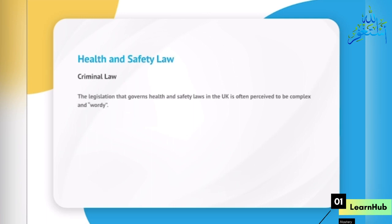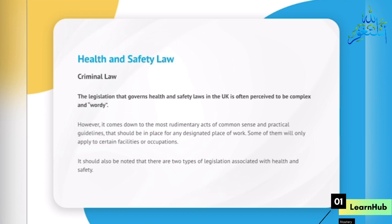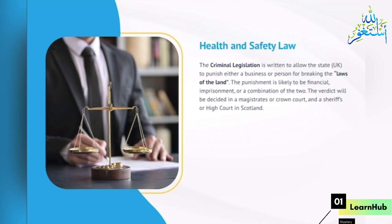Health and Safety Law — Criminal Law. The legislation that governs health and safety laws in the UK is often perceived to be complex and wordy. However, it comes down to the most rudimentary acts of common sense and practical guidelines that should be in place for any designated place of work. Some will only apply to certain facilities or occupations. There are two types of legislation associated with health and safety. The criminal legislation is written to allow the state to punish either a business or person for breaking the laws of the land. The punishment is likely to be financial, imprisonment, or a combination of the two. The verdict will be decided in a magistrate's or crown court, and a sheriff's or high court in Scotland.